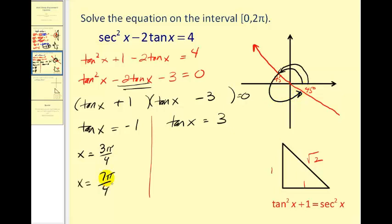Okay for tan x equals three. We're going to have to use our calculators because this has not come out to a nice reference angle. Remember if we solve this equation for x by taking the inverse tangent of both sides, we would have x equals inverse tangent three. So let's go to the calculator now.